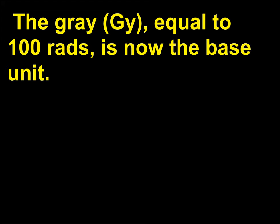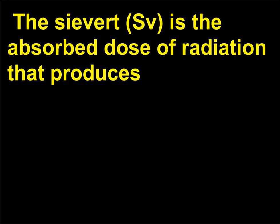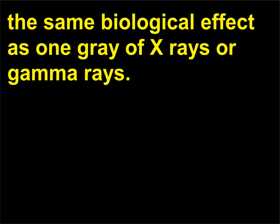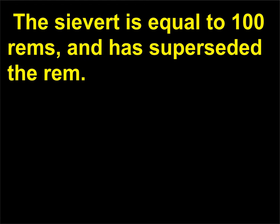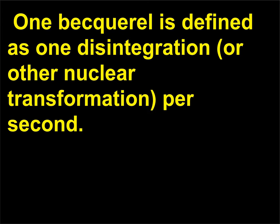The gray (Gy), equal to 100 rads, is now the base unit, also expressed as the energy absorption of 1 joule per kilogram of irradiated material. The sievert (Sv) is the absorbed dose of radiation that produces the same biological effect as one gray of X-rays or gamma rays. The sievert is equal to 100 rems and has superseded the rem. The becquerel (Bq) measures the radioactive strength of a source but does not consider effects on tissue. One becquerel is defined as one disintegration, or other nuclear transformation, per second.